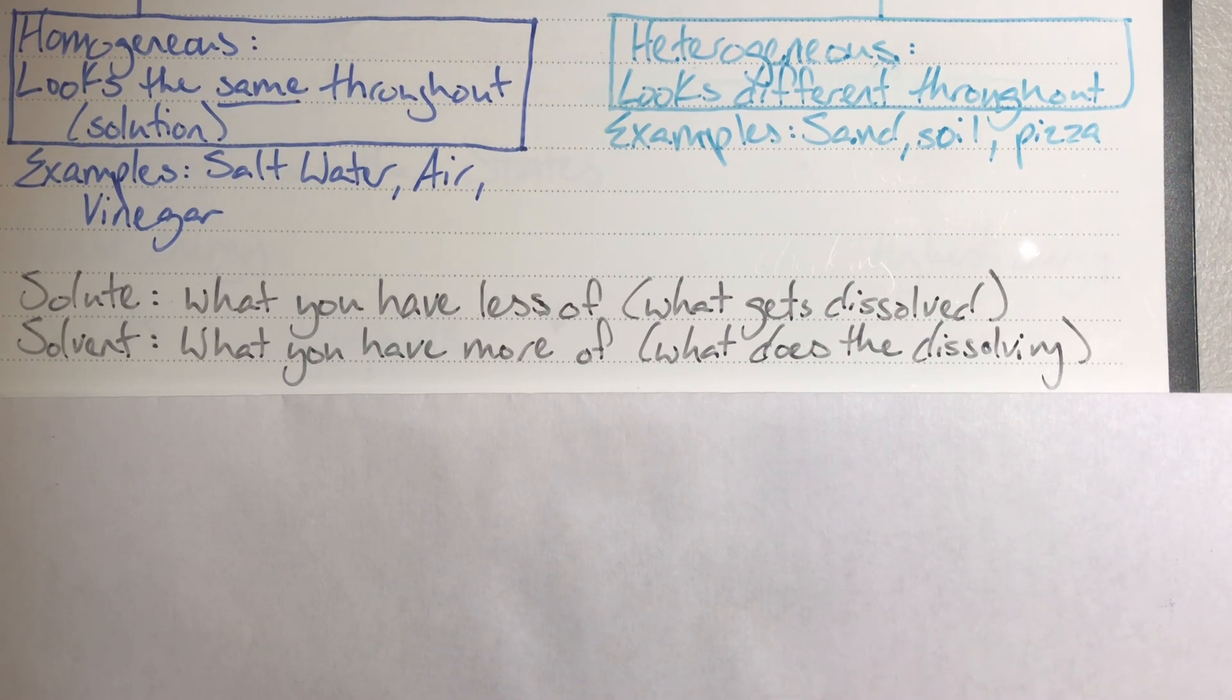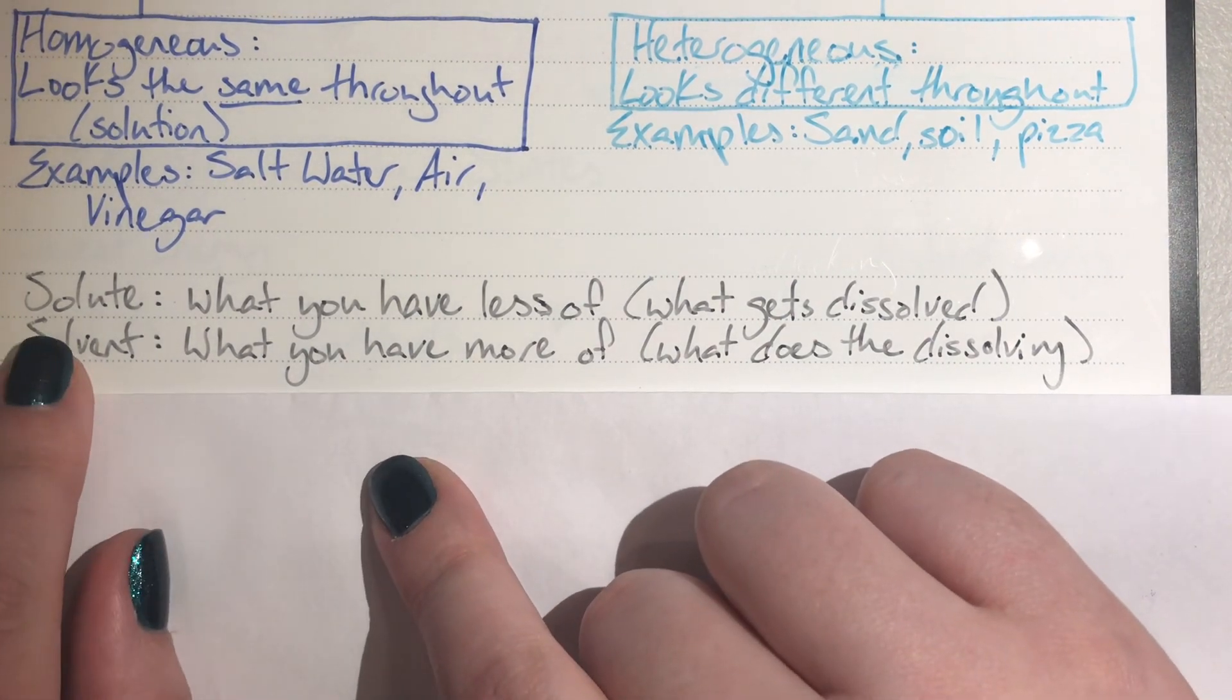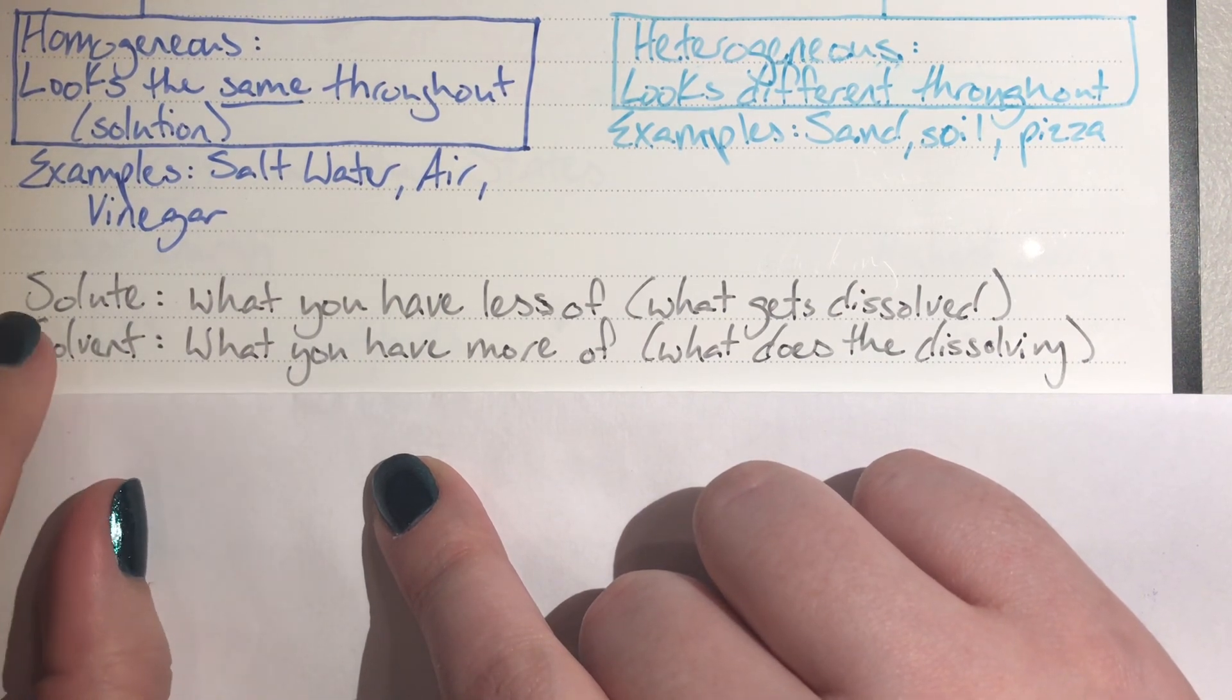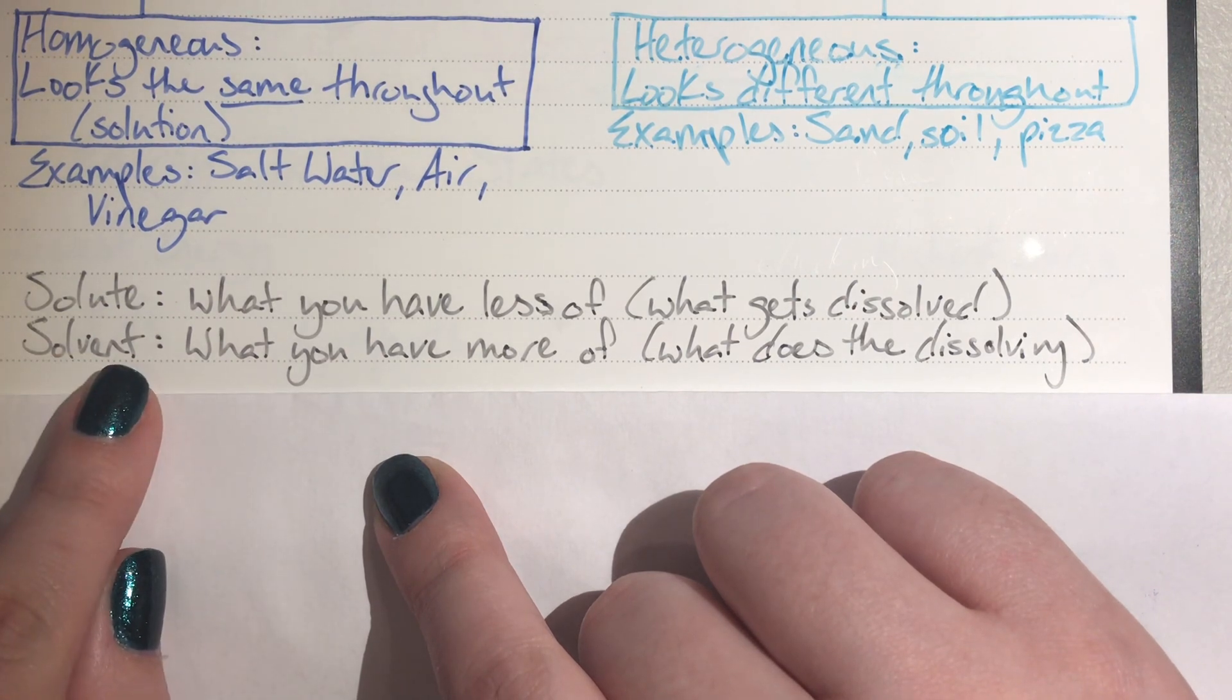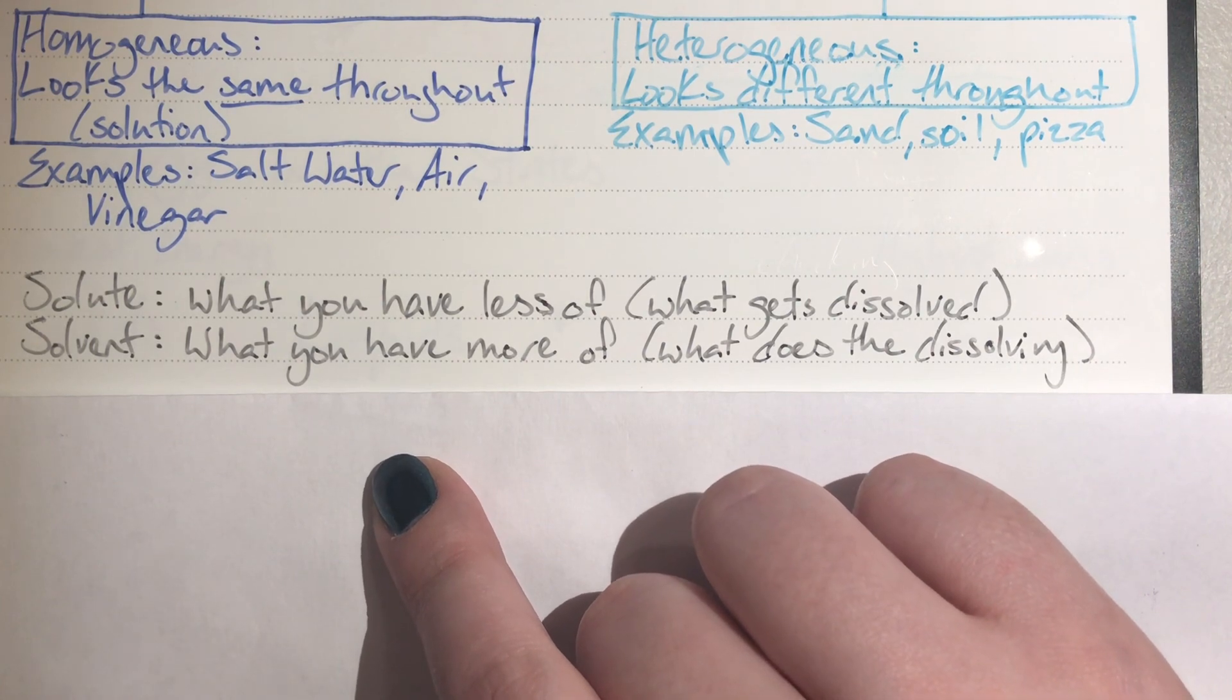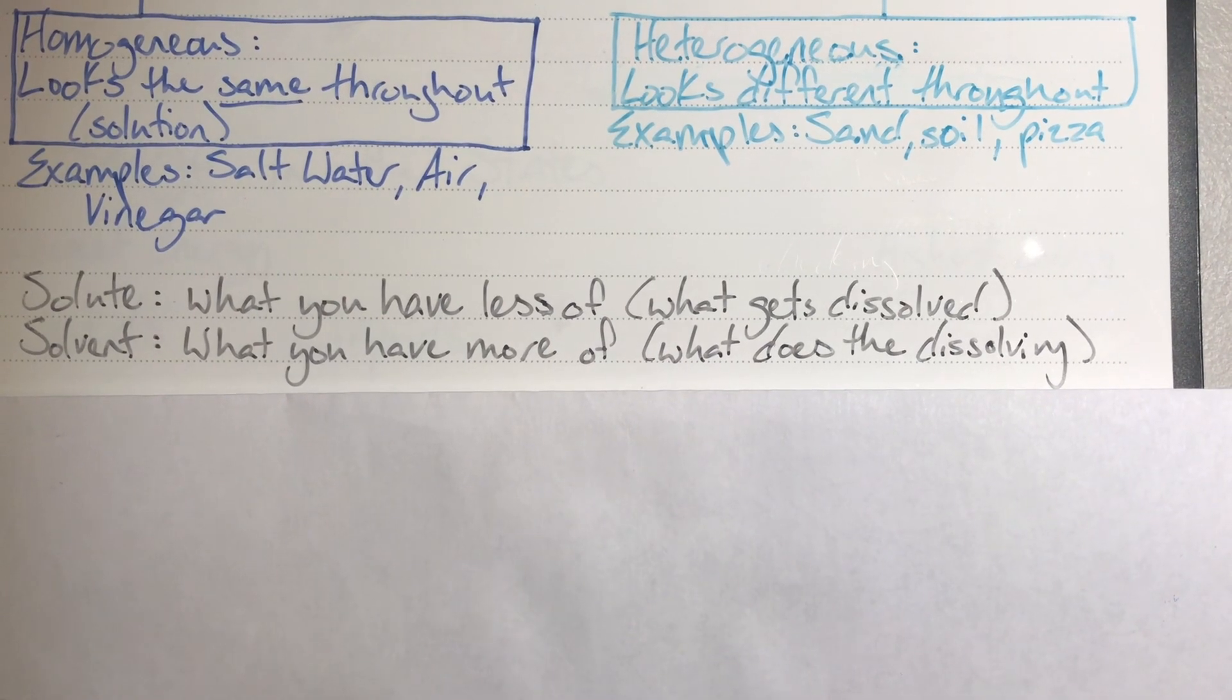The way that I remember that solute is what I have less of is I actually count the number of letters in the words solute and solvent. Solute has six letters and solvent has seven, so solute is literally smaller than my solvent. That's how I personally memorized solute versus solvent.